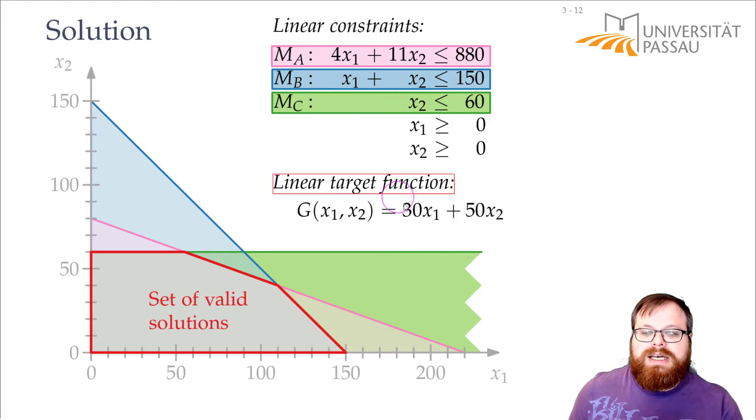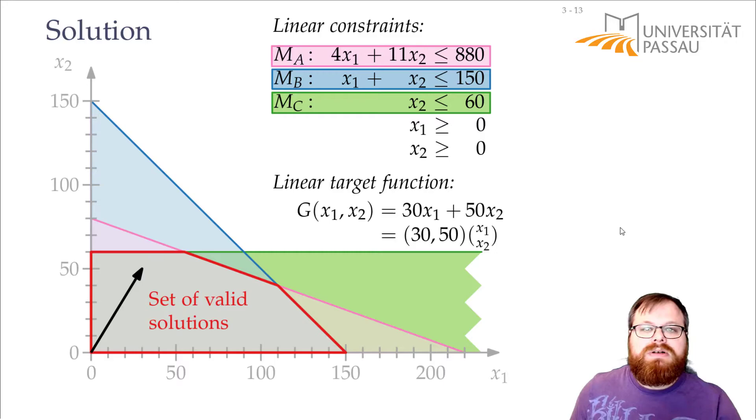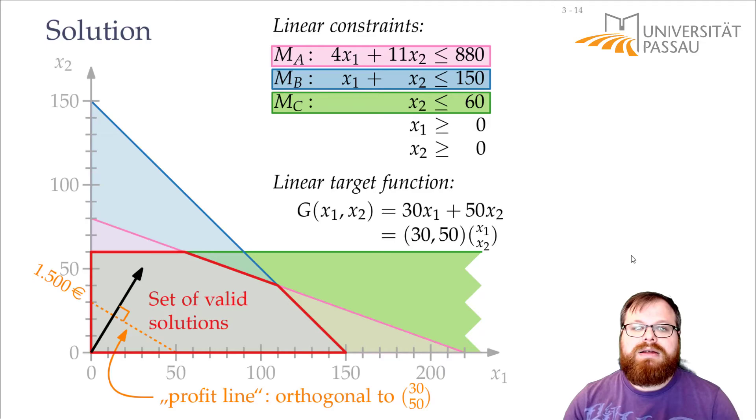And that's where this target function that we got comes into play. The target function tells us we get 30 Euro for every keyboard and 50 Euro for every mouse. So this is some function that we want to maximize. And if we place it here, it's basically a vector. It's some cost vector. 30 times x1 plus 50 times x2. It's exactly this vector here.